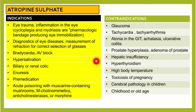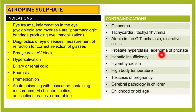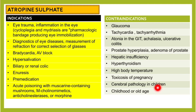Contraindications of atropine sulfate include glaucoma, tachycardia, tachyarrhythmia, atonia of the GIT, achalasia, ulcerative colitis, prostatic hyperplasia, prostatic adenoma, hepatic insufficiency, hyperthyroidism, high body temperature, toxicosis of pregnancy, cerebral pathology in children, and extremes of age — childhood or old age.